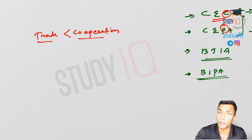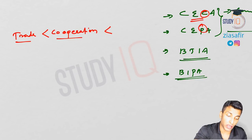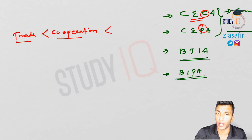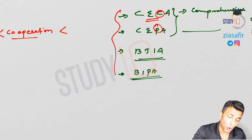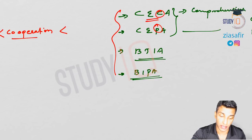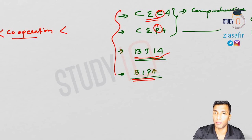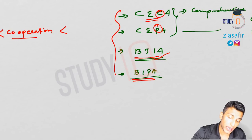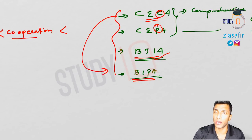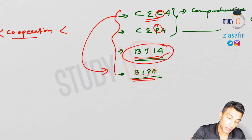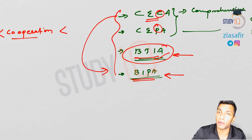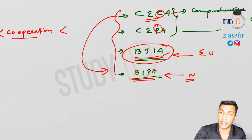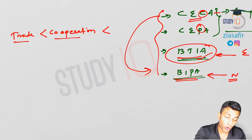Between trade and cooperation, cooperation has more importance. And above cooperation is partnership — that term itself signals a deeper relationship. However, cooperation and partnership are all essentially the same kind of arrangement. BTIA, BIPA, CECA, CEPA — all these are diplomatic words. What you need to know is what elements actually come under each of these agreements and what levels of cooperation they imply.